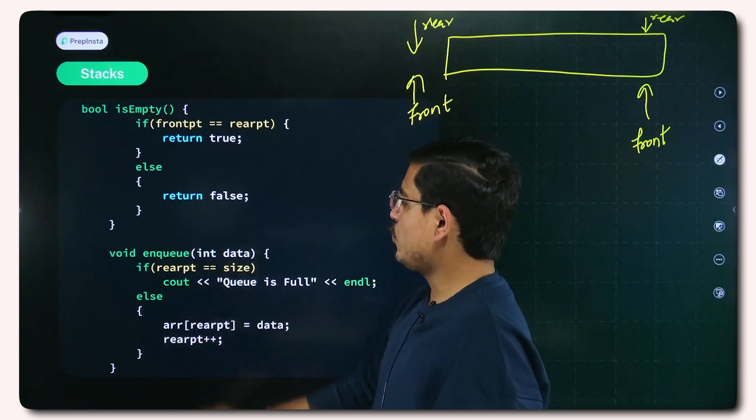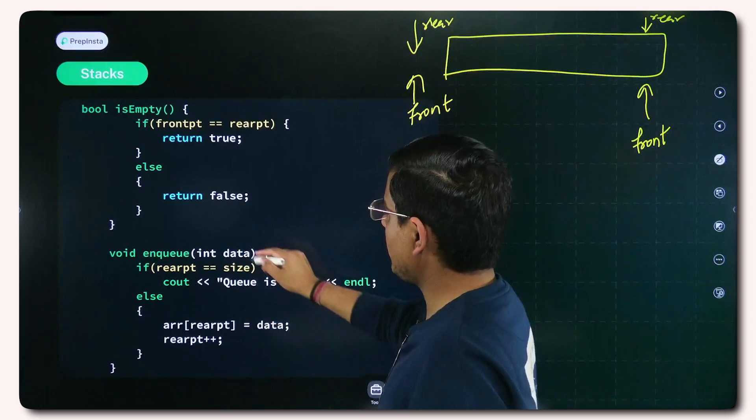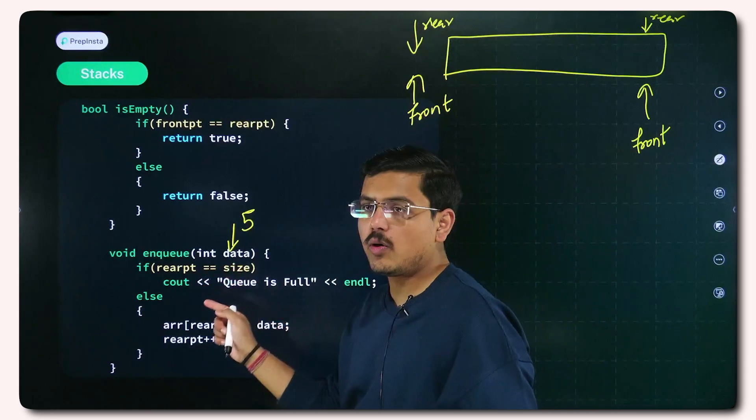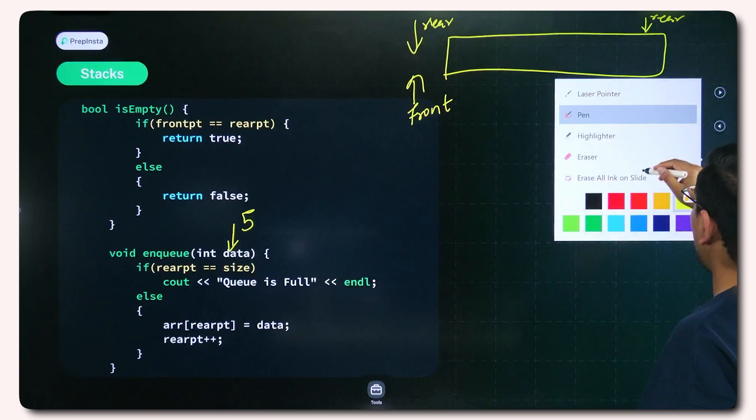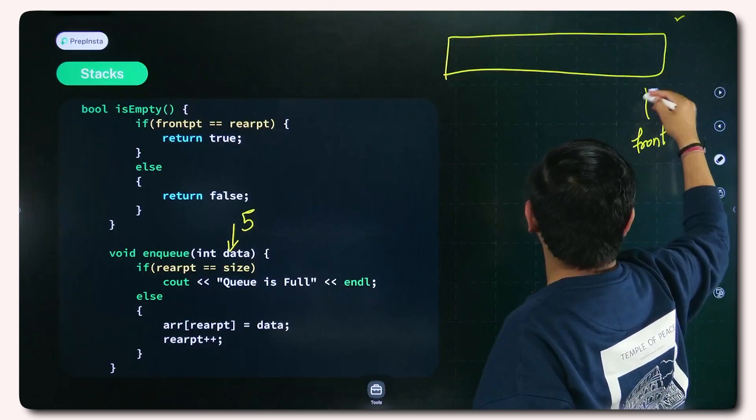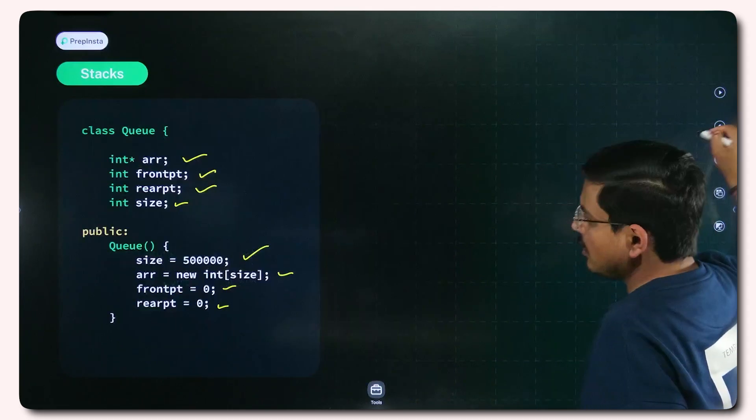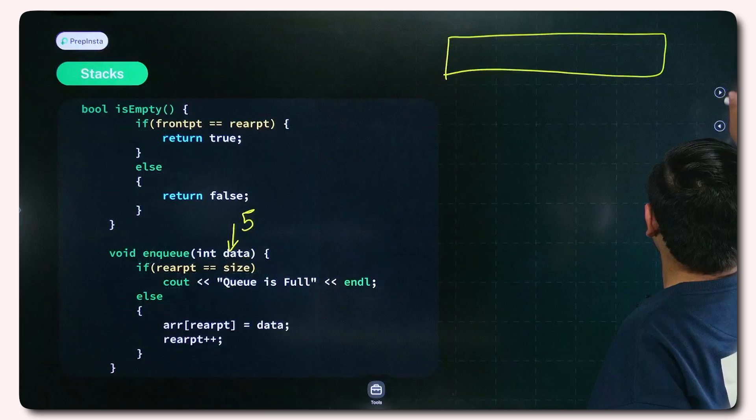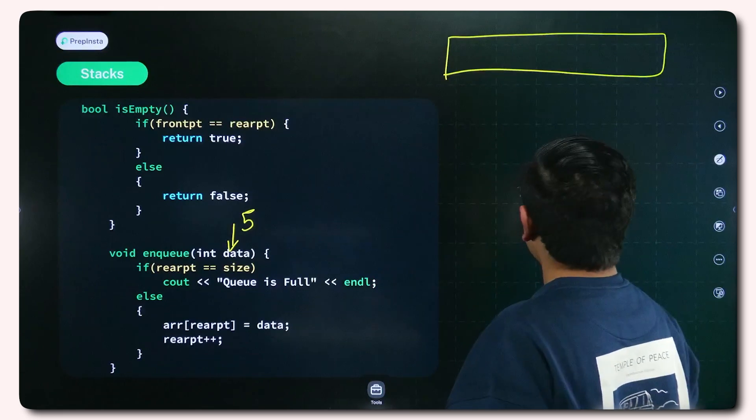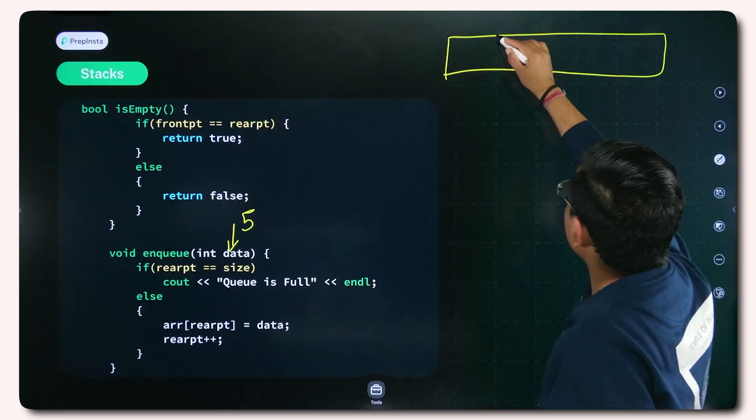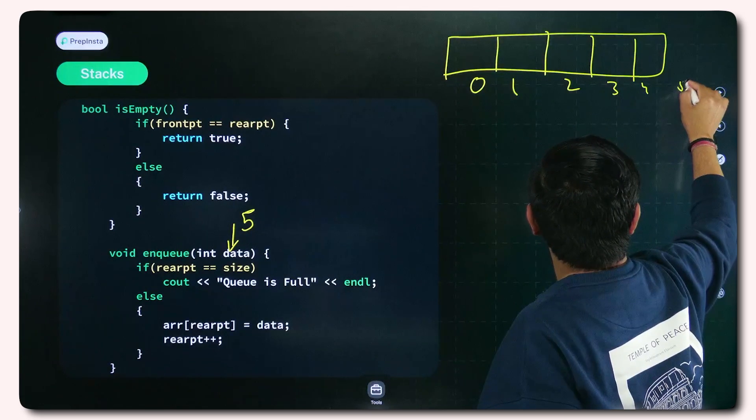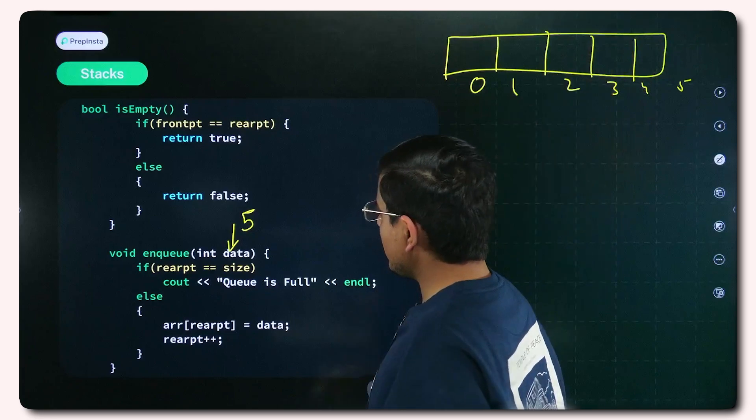By principle we follow that whenever front and rear pointer of any queue are equal, then the queue is empty. I will explain you how this happens. If front PT is equal to rear PT, then return true that the queue is empty, else return false. Simple function, no rocket science. When I come to enqueue function, I give some integer variable data, for example I give 5 as an element which should be entered. If rear PT equal to size, now say that I have however declared 50,000 or 5 lakhs something like that as my size.